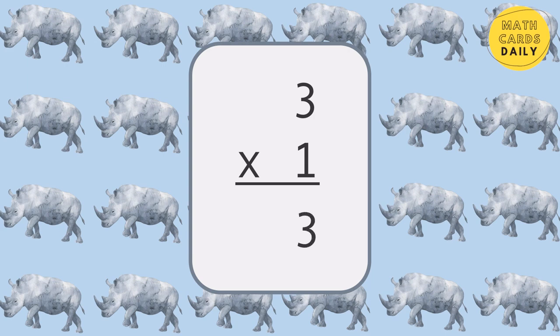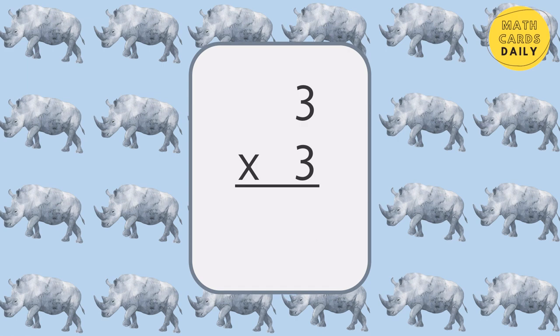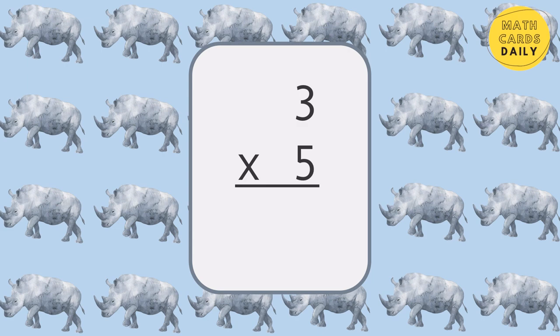3 times 1 is equal to 3. 3 times 2 is equal to 6. 3 times 3 is equal to 9. 3 times 4 is equal to 12. 3 times 5 is equal to 15.